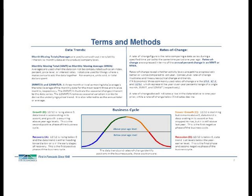There are four primary metrics that we use here at ICR to determine where your business or an industry is within the business cycle. First, we have our moving totals or moving averages. We use the 3-MMT, or 3-month moving total, or the 12-MMT, or 12-month moving total. We also refer to these as quarterly totals or annual totals.